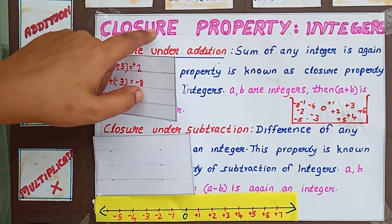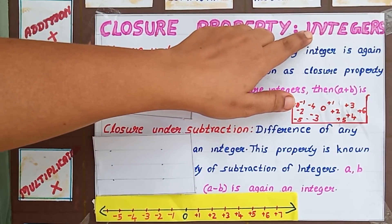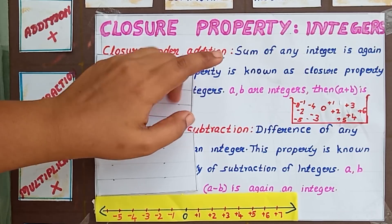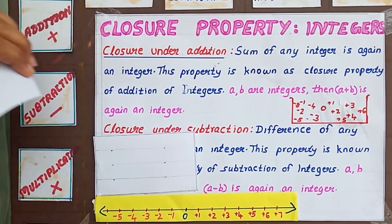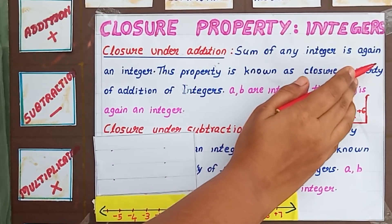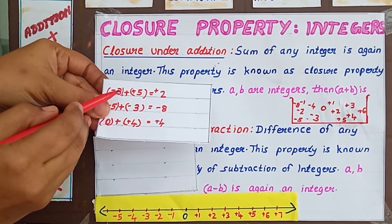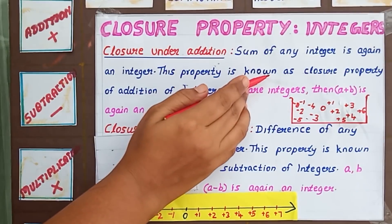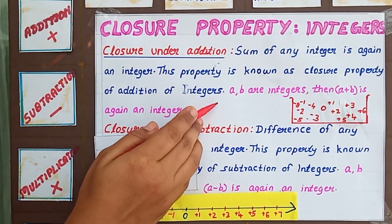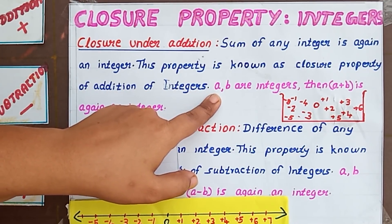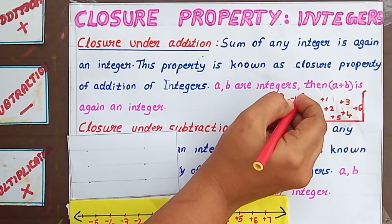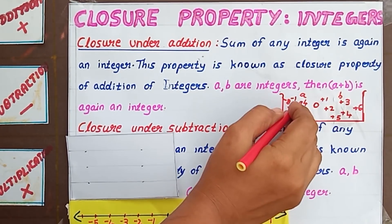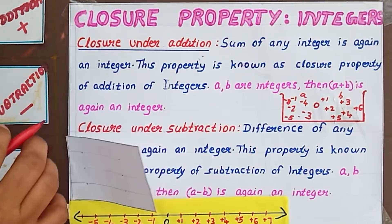Integers satisfy closure property under addition. The definition: the sum of any two integers is again an integer. These two were integers and their sum, +2, is again an integer. This property is known as closure property of addition of integers. You can also express it as: if A and B are integers, then A + B is again an integer.